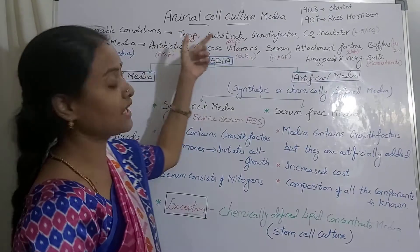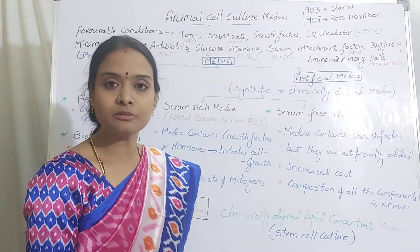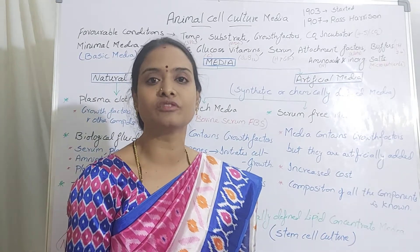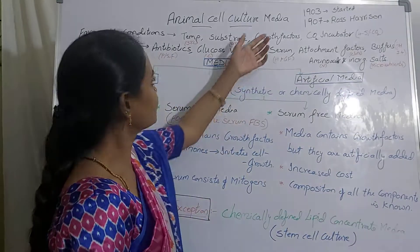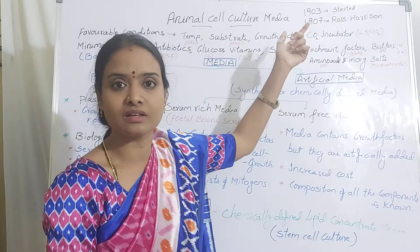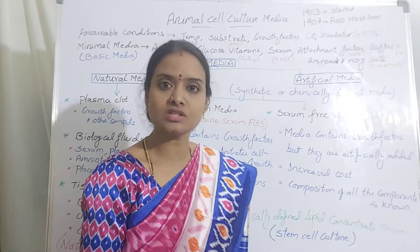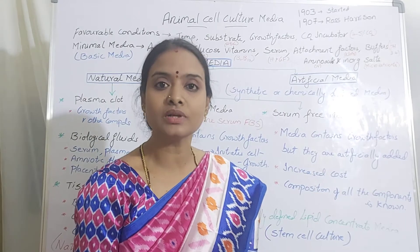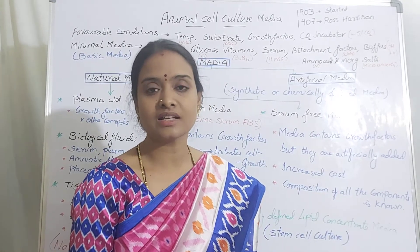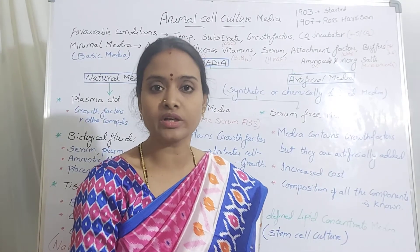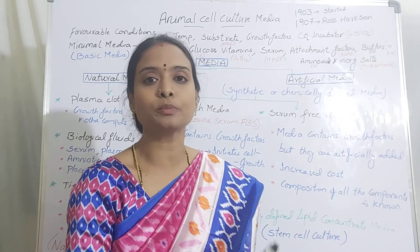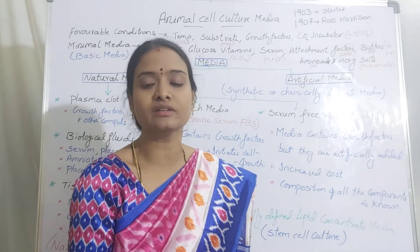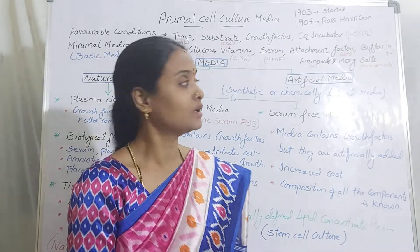So what do you mean by animal cell culture? Animal cells are cultured in vitro under a favorable environment. The media you provide is a balanced salt solution which creates a favorable environment for the cell, as if they are growing inside the body of an organism — you provide the same conditions in the container or in the animal tissue culture lab.